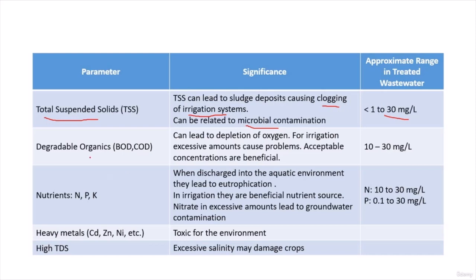We also have the BOD and the COD — those organic matters that can lead to depletion of oxygen. This is one of the major problems of BOD. For example, it will cause eutrophication of surface water if we are discharging into a surface water. For irrigation, excessive amounts will cause problems, but if we are in the acceptable range, it is actually beneficial.